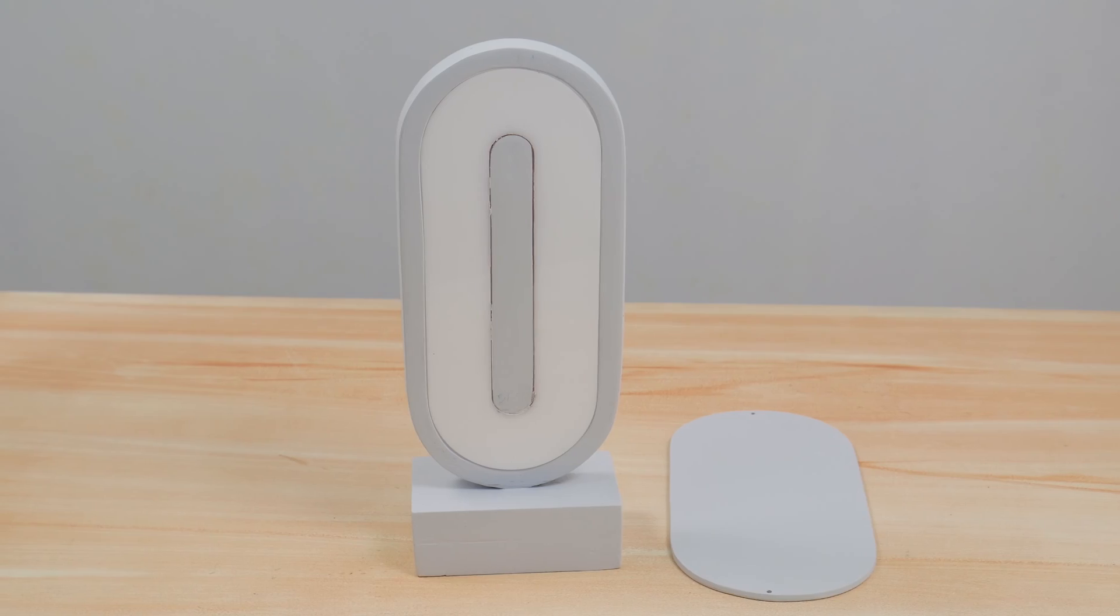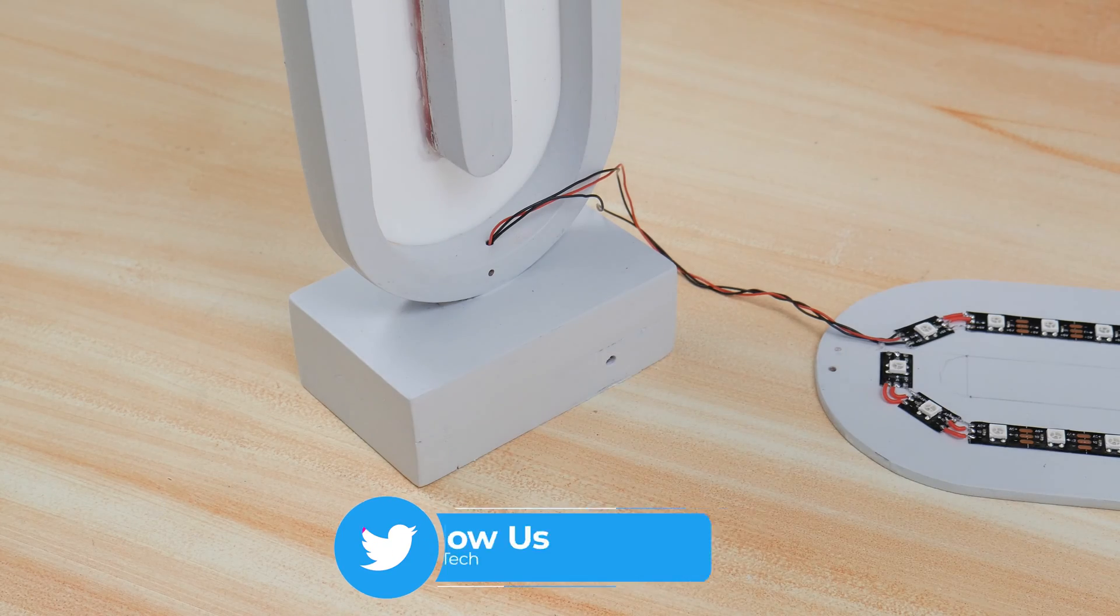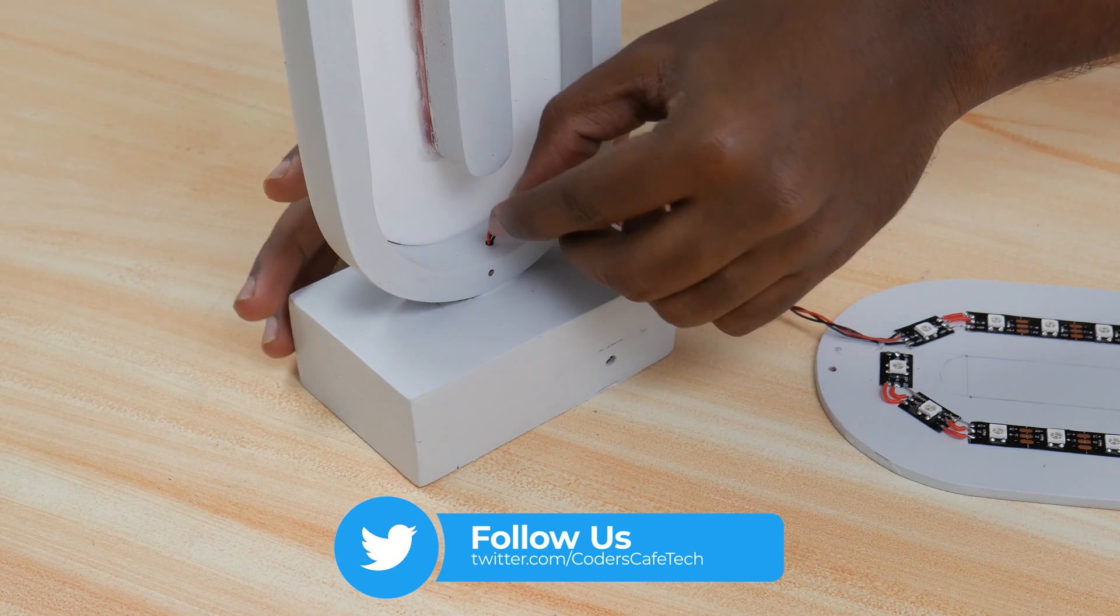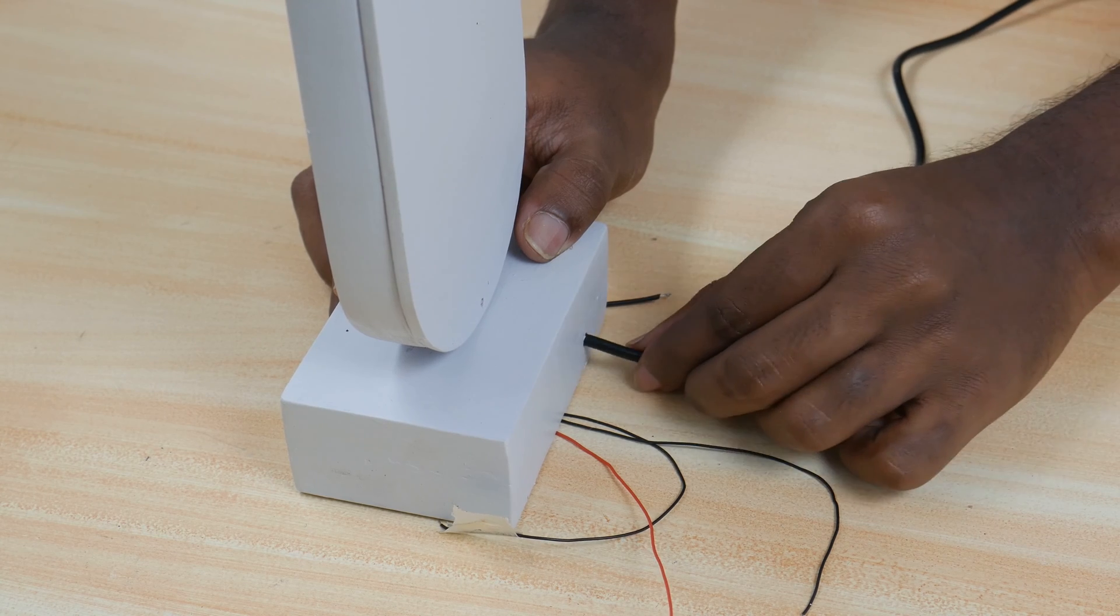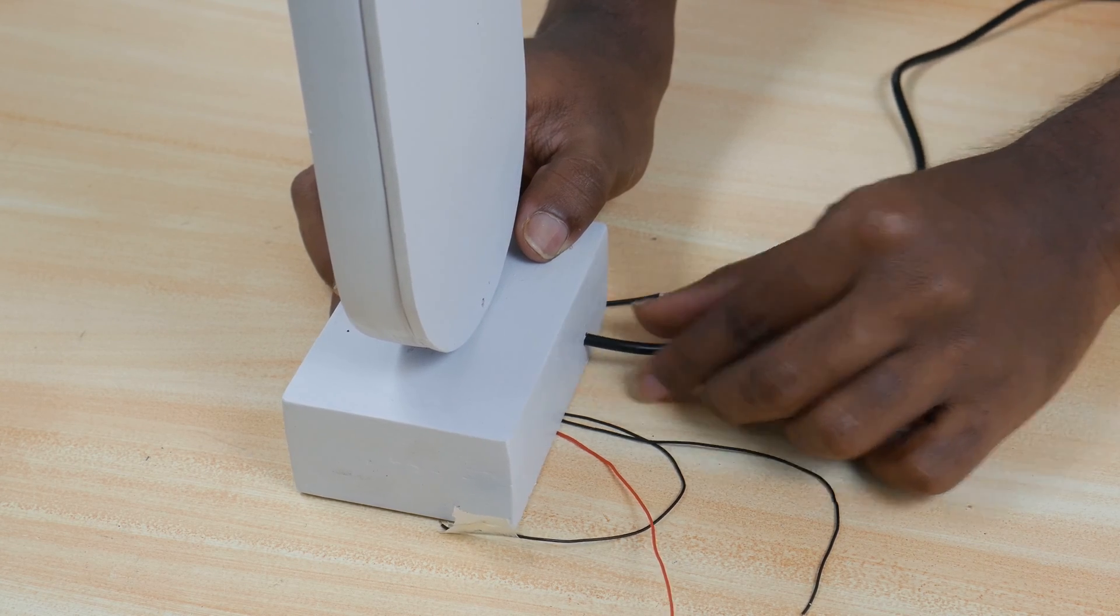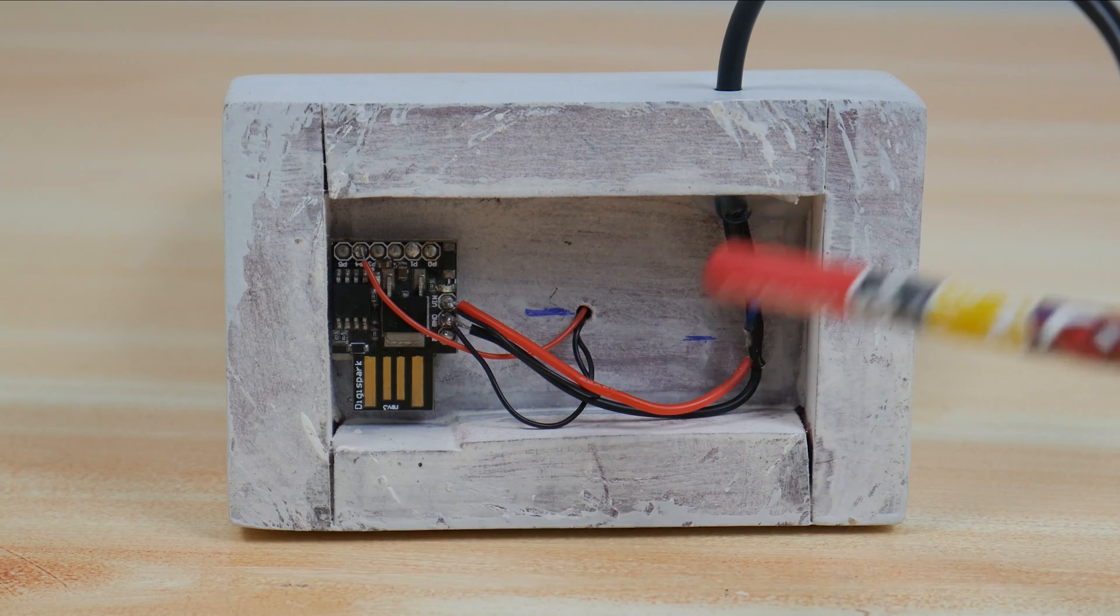Now stick the LED strip to the base layer and take out the connection wires to the hole made for this purpose. Fix the top layer in the base using wood screws. Now pass the power cable into the hole made in the stand. Solder all the connections to the microcontroller and we are ready for the test.